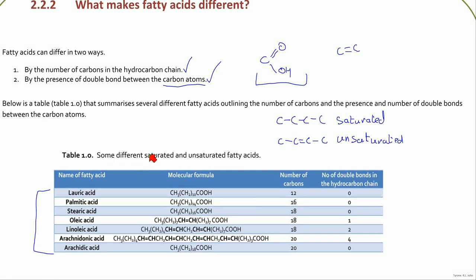You don't need to remember the names of them. In terms of the bonds between the carbons, the first three have single bonds between the carbon atoms, and the next three have double bonds. Oleic acid just has one, linoleic acid has two, and arachidonic acid has four. So you can get multiple double bonds in fatty acid chains.